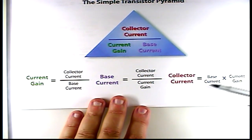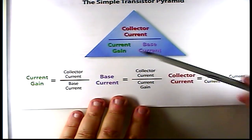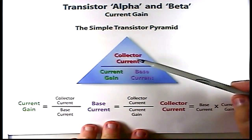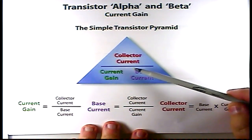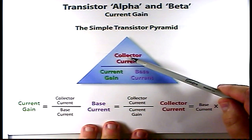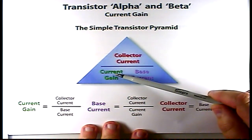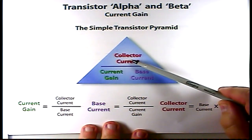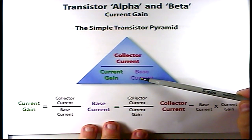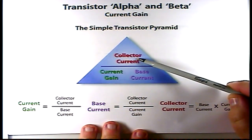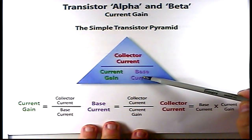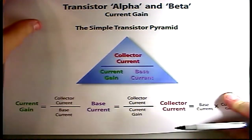The collector current is equivalent to the base current times the current gain. So if you look at your triangle here, if we want to find base current and we don't know it, then we can take collector current and divide it by current gain. If we want to find the current gain and we don't know it, we can take the collector current and divide it by the base current. If we want to find the collector current, then we can multiply current gain times base current.